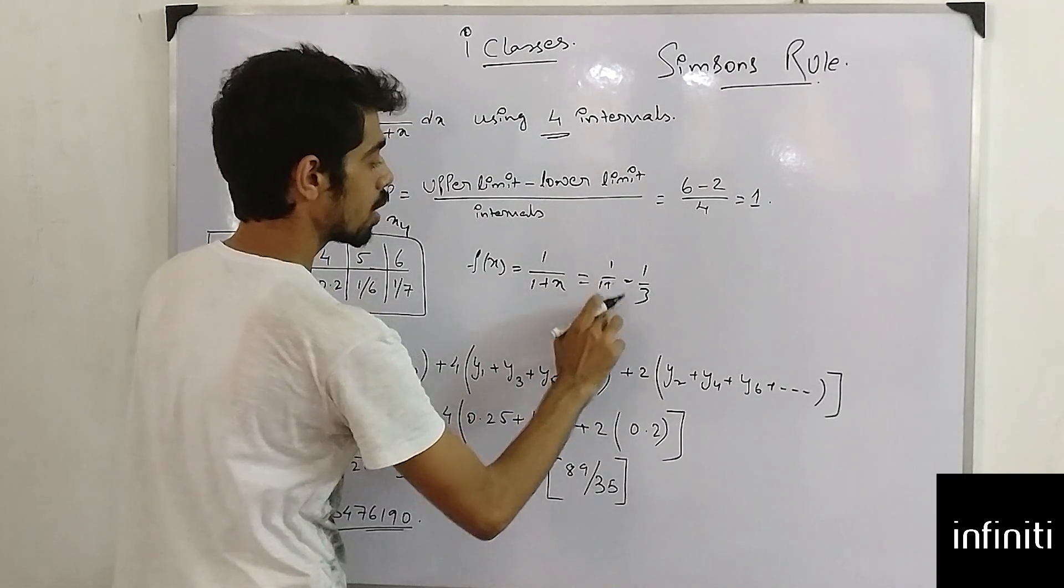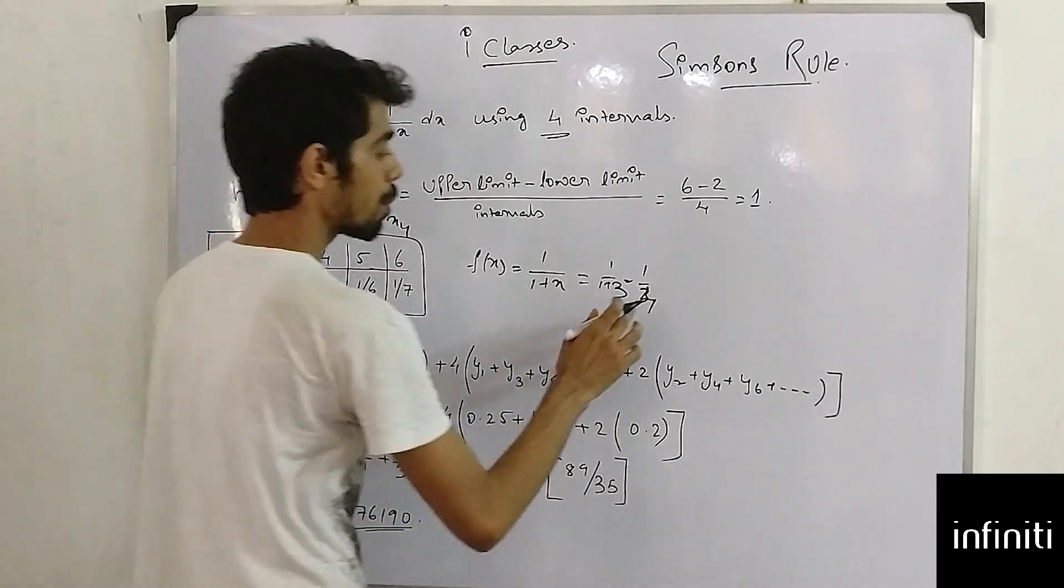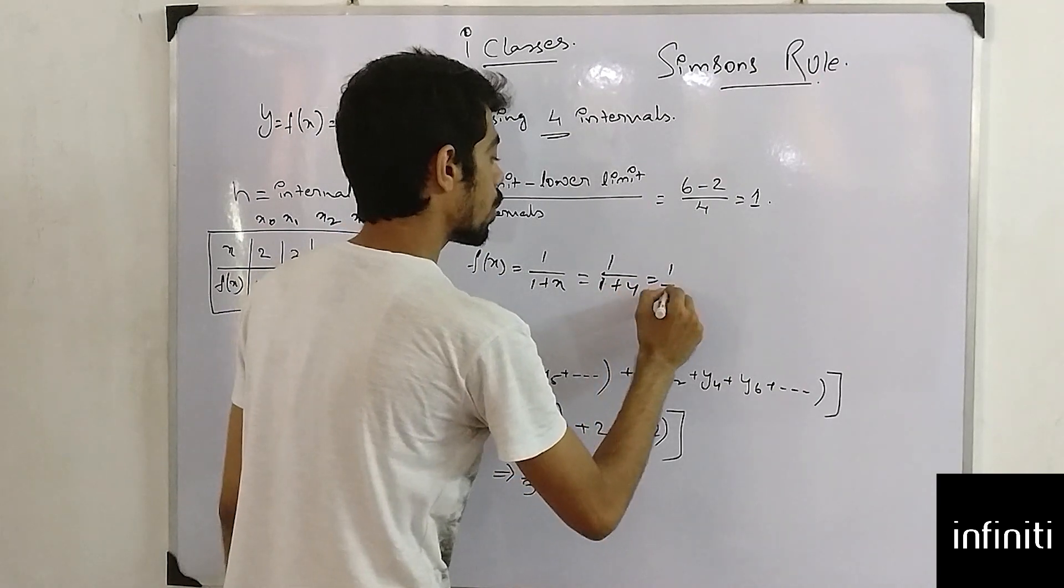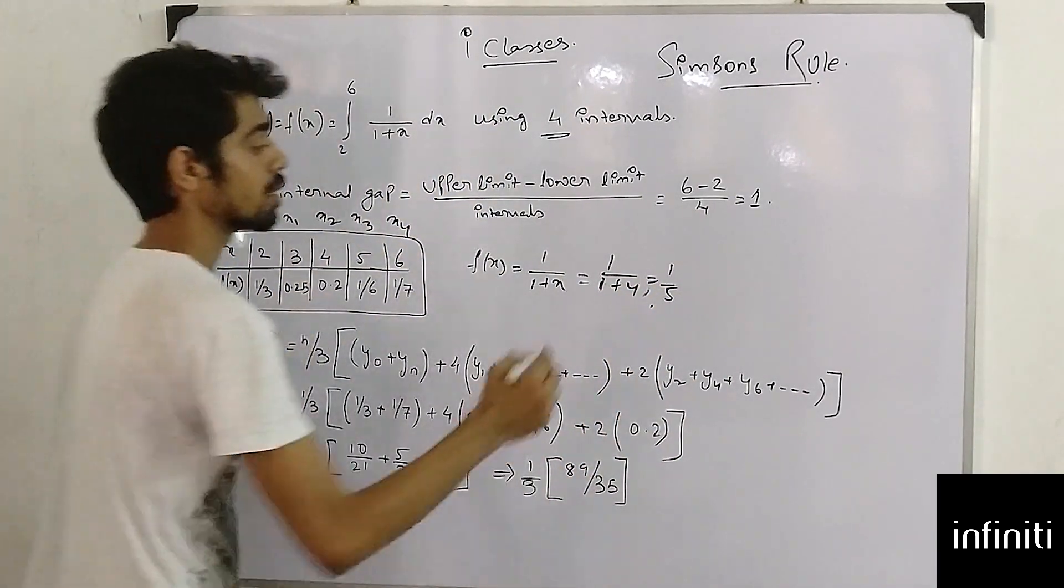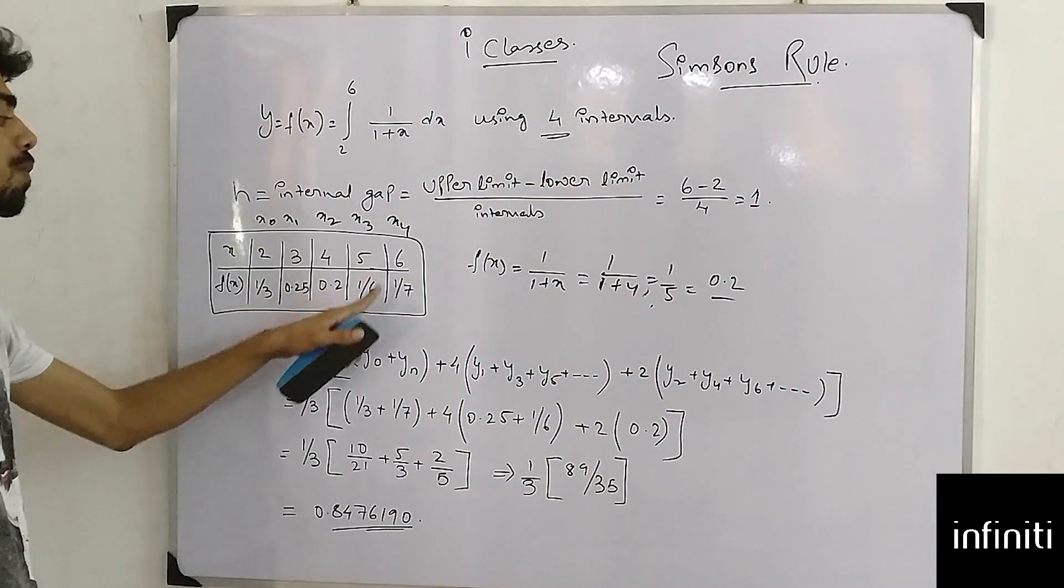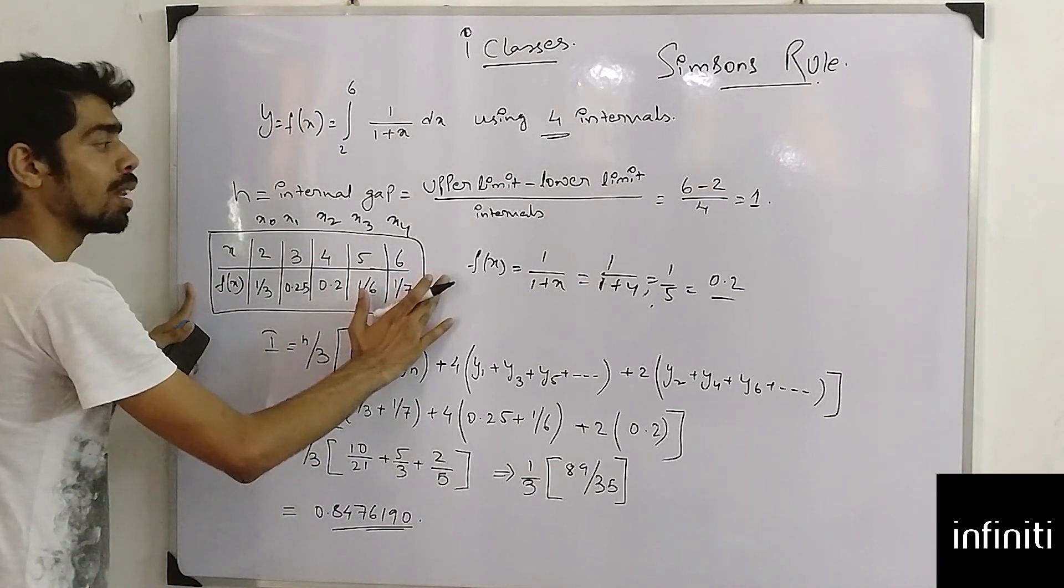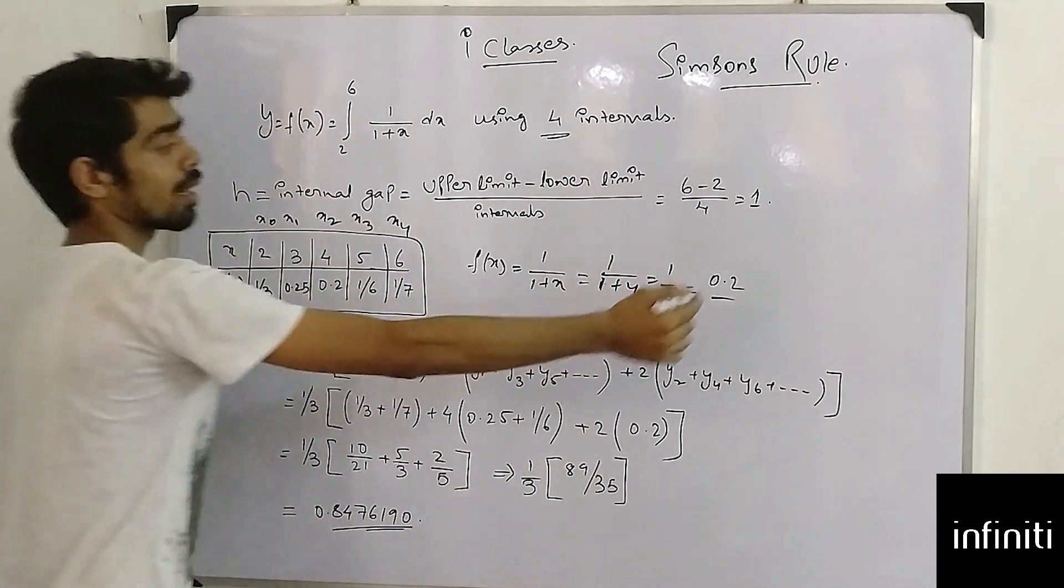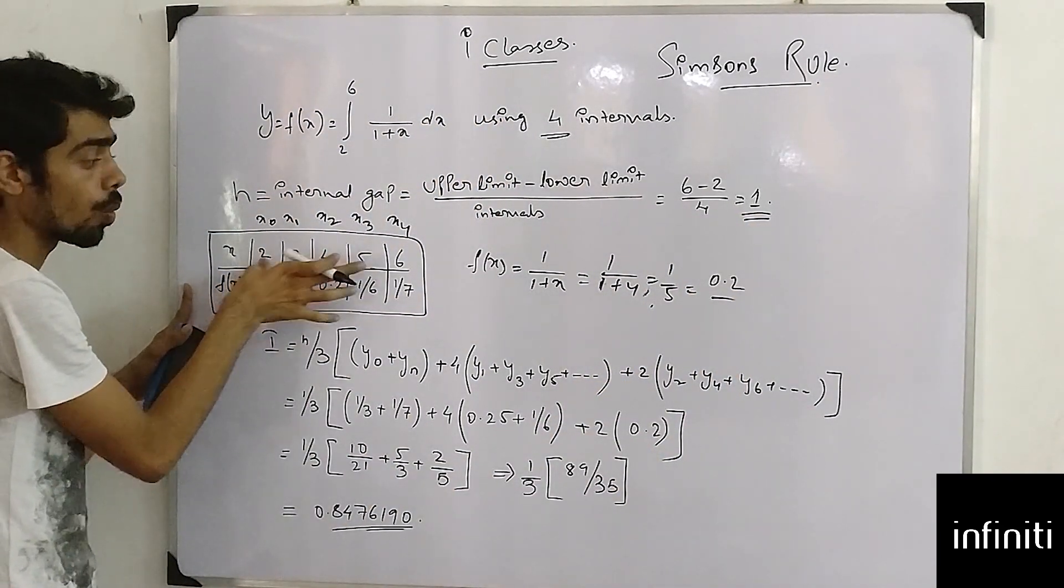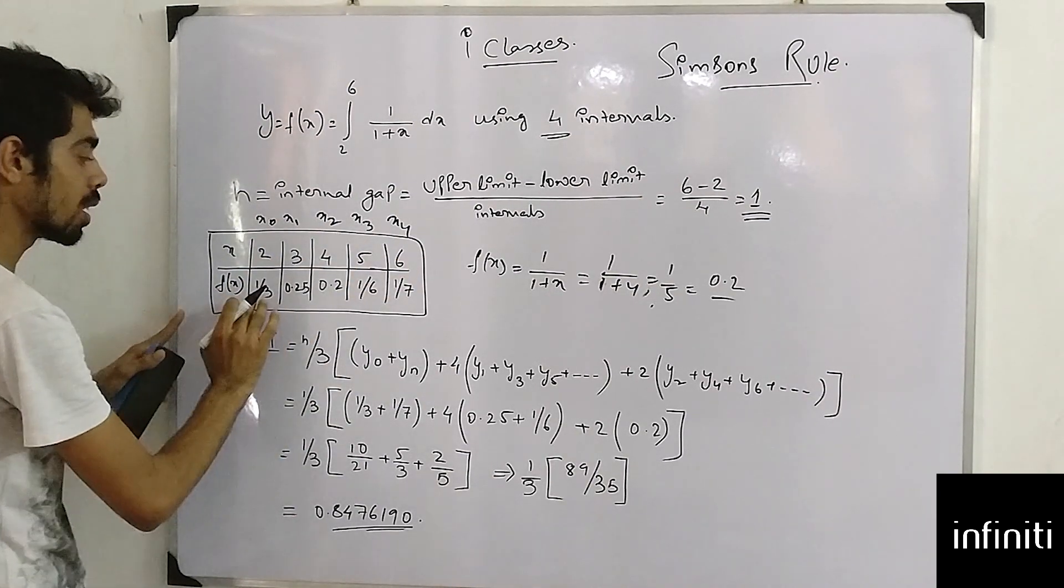For x1, if I put 3 I will get 1 by 4, which is 0.25. If I put 1 by 1 plus 4, which equals 1 by 5, I will get 0.2. If I put 5 I will get 1 by 6. If I put 6 I will get 1 by 7. So I have constructed the table by incrementing just 1 value. What is my lower limit? 2. What is my upper limit? 6.